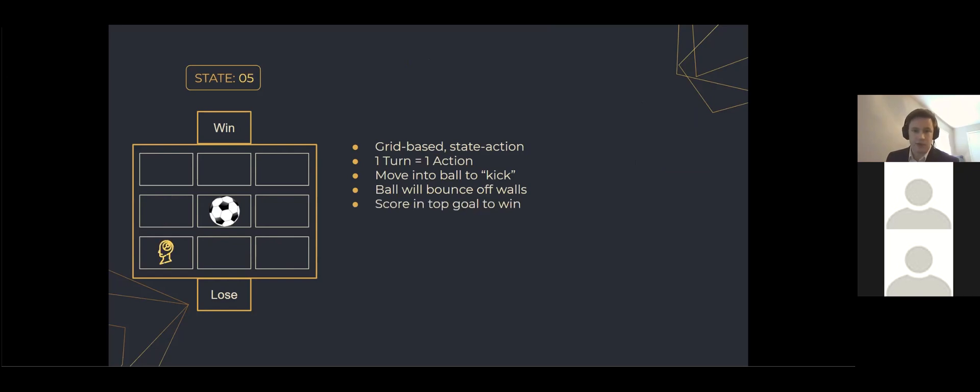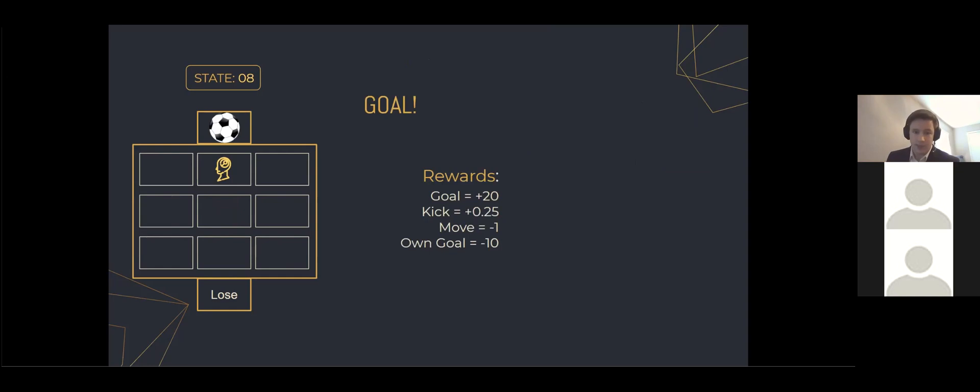The aim of the game is to score a goal in the opponent's net at the top. Doing so will give a reward of 20. The agent will receive a small negative reward for every turn it takes. This is to incentivize the most efficient solution. If the agent scores in their own goal at the bottom, there's a large negative reward of minus 10. And to help the agent along the path to proper goals, there's a small reward of 0.25 for making contact with the ball.